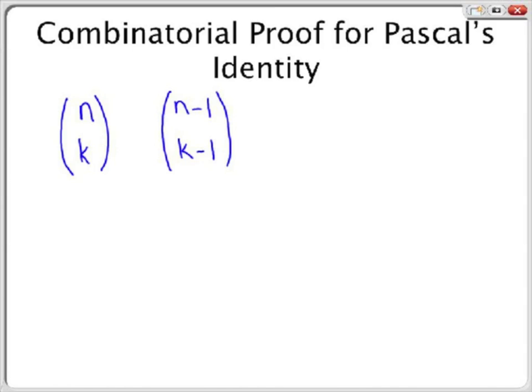Additionally, suppose the opposite case where x is not in subset k. Then you will still need to choose all k elements in the subset from the n minus 1 objects that remain in the initial set of n elements. This can be shown as n minus 1 choose k.